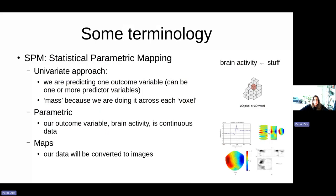To start off, I just want to introduce you to some terminology. SPM stands for statistical parametric mapping. I just want to highlight that this is a univariate approach, which basically means we're just predicting one outcome variable. In this case, we're going to be looking at brain activity and how it's affected by what I call here 'stuff.' These are our variables of interest. A univariate approach just means that we have one outcome variable — brain activity — and we can have one or more predictor variables. So 'stuff' can also be 'stuffs.'